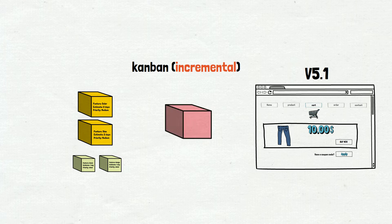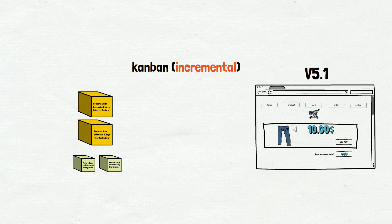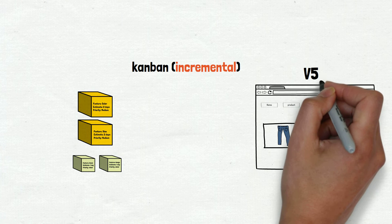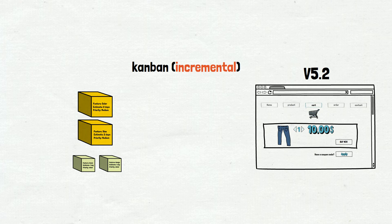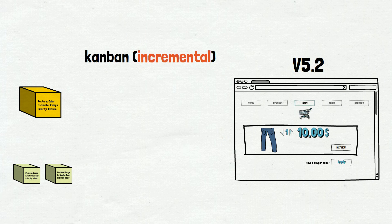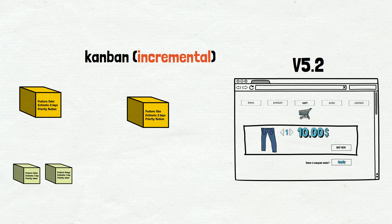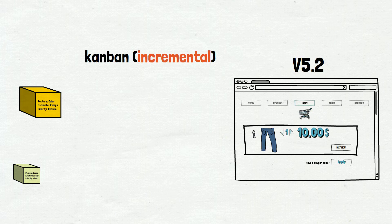Then the team takes the next highest-priority feature into development. When it's ready, it will also be released to end users — this is already the second increment. The version of the website changes from 5.1 to 5.2, and end users have a new working version with two new features. It is not necessary that only one feature be released. For example, a team can develop a medium-priority feature, not release it, take one more small feature into development, and when both are completed, release two at once — this will be the third increment.